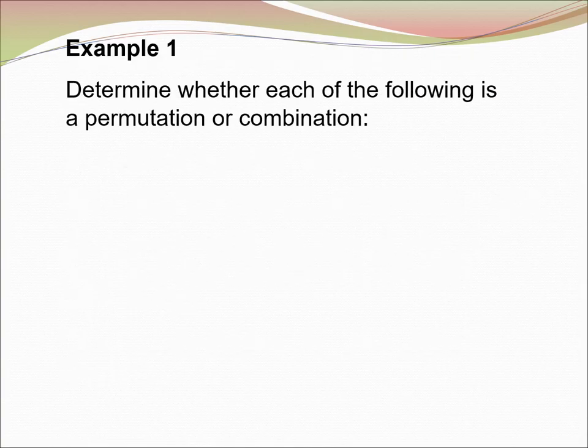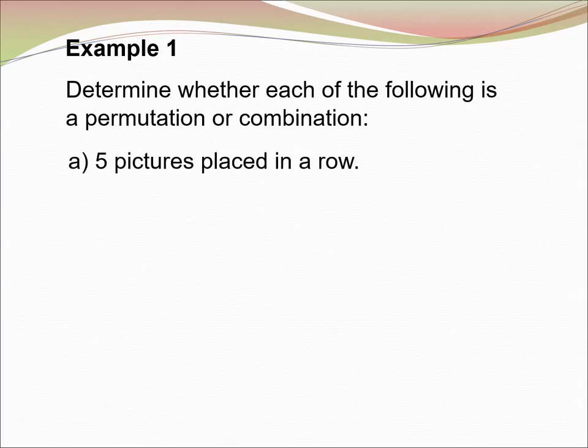Example 1. Determine whether each of the following is a permutation or combination. (a) 5 pictures placed in a row. We know that the order is important. So, this is permutation.